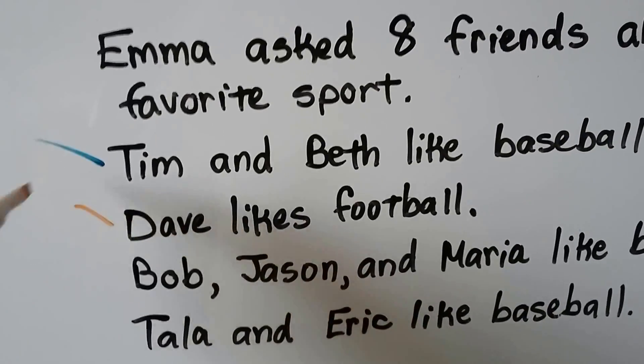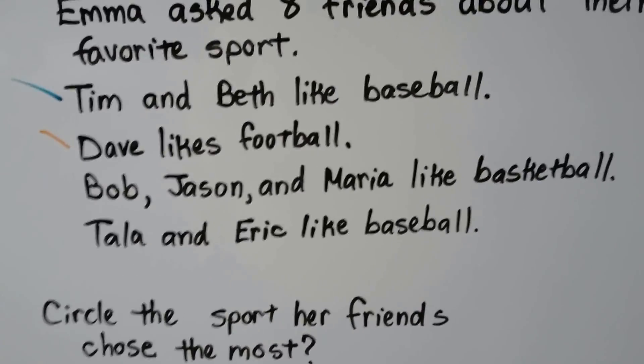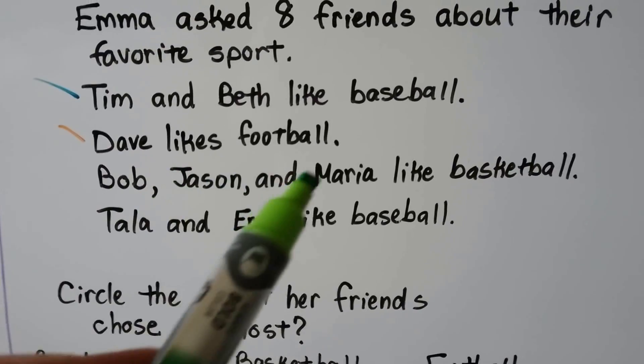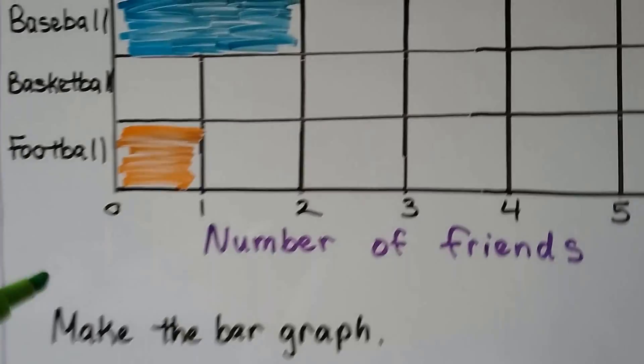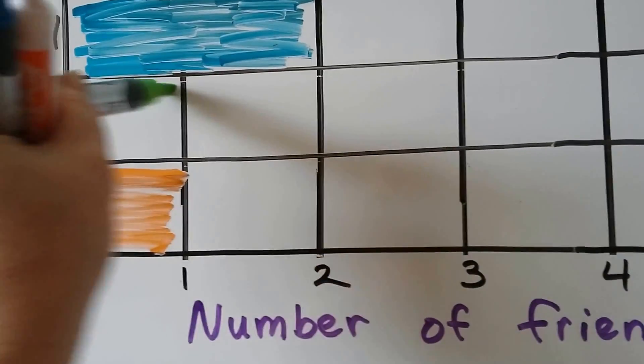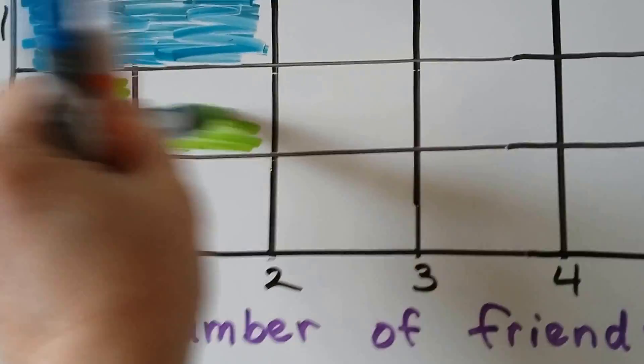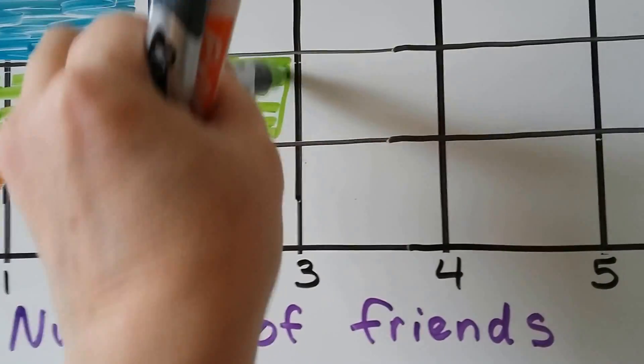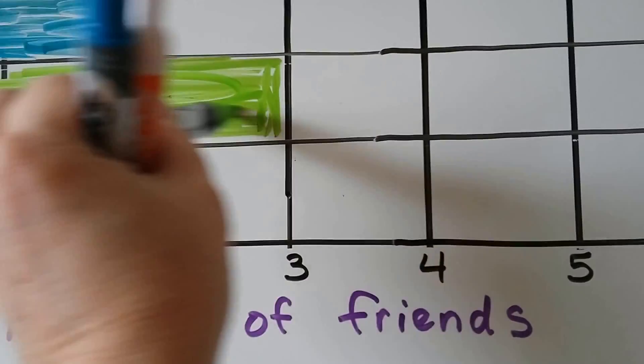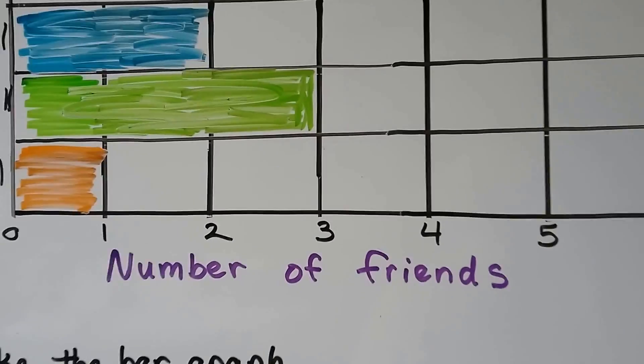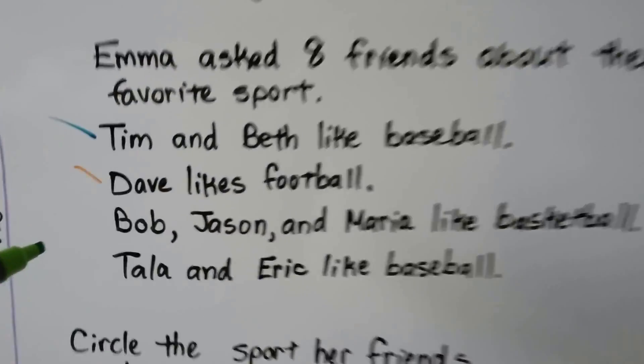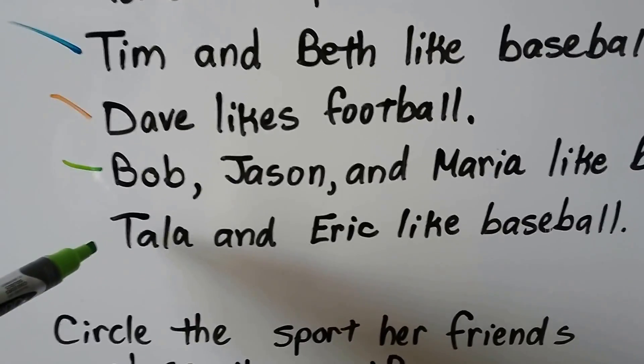So we've got Dave. Now it says Bob, Jason, and Maria like basketball. Well, that's one, two, three people like basketball. So we can fill in three for basketball. One, two, three. And I'm not going to do it perfect because I don't want to take too long on the video. But that's three for basketball. So we answered that one.